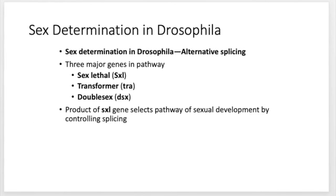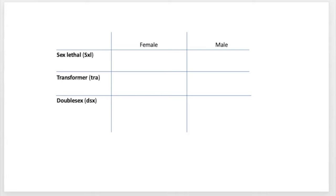Here is an overview of what we're going to be talking about. In Drosophila, sex is determined by alternative splicing, and there are three major genes in the pathway. I'm going to step you through each and every one of these genes. We're going to be filling out a little table as we go — please don't take the table as the end all and be all, it's just a useful summary.